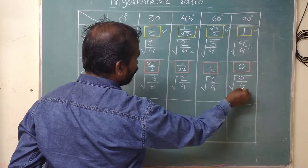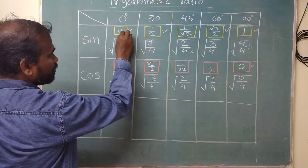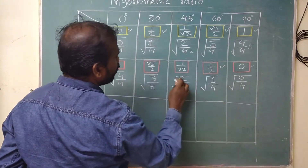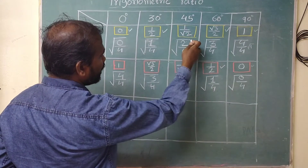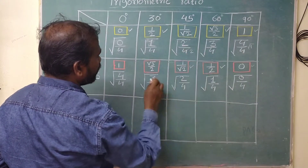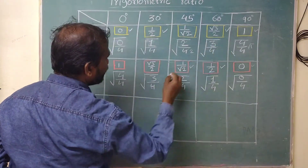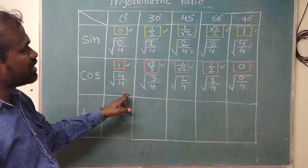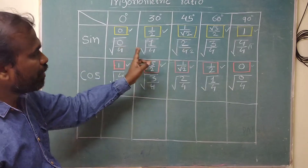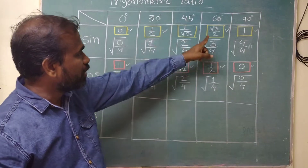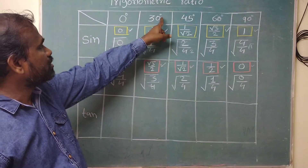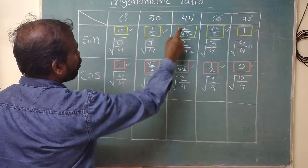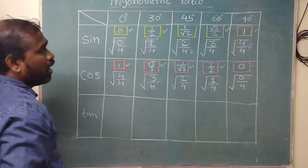The same thing applies for cosine, but in reverse order. 0/4 gives 0, 1/4 gives 1/2, and root of 3/4 gives √3/2, and 4/4 gives 1. So without memorizing we can remember or calculate the values of sin 0°, sin 30°, sin 45°, sin 60°, sin 90°, as well as cos 0°, cos 30°, cos 45°, cos 60°, cos 90°.